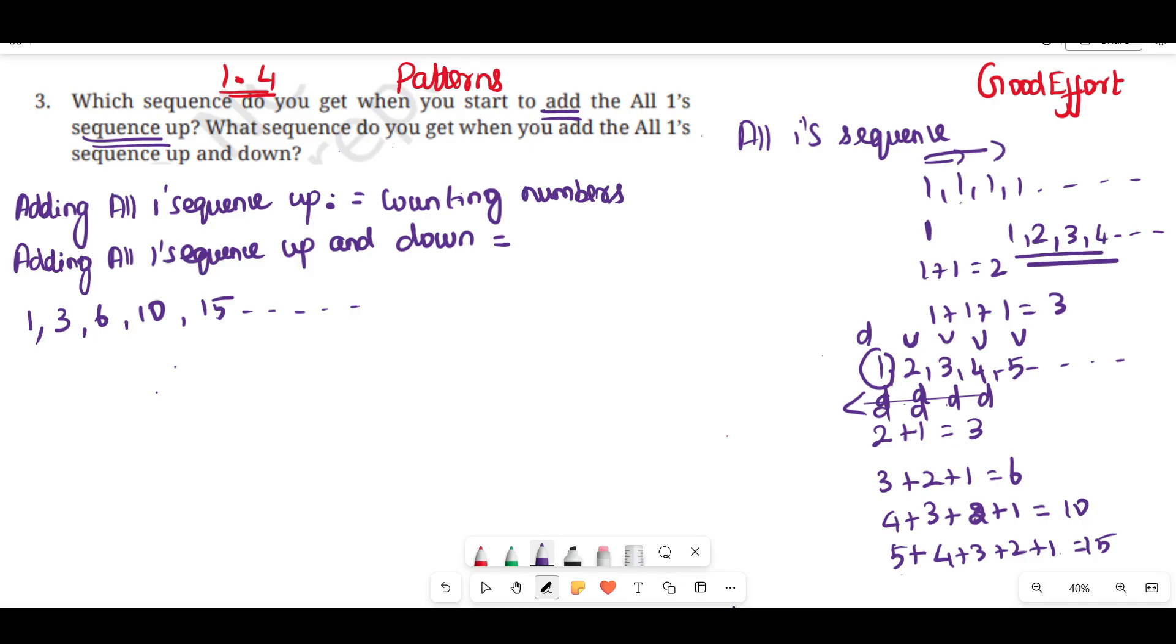How do you call this sequence numbers? It is up number triangular numbers. Triangular numbers.